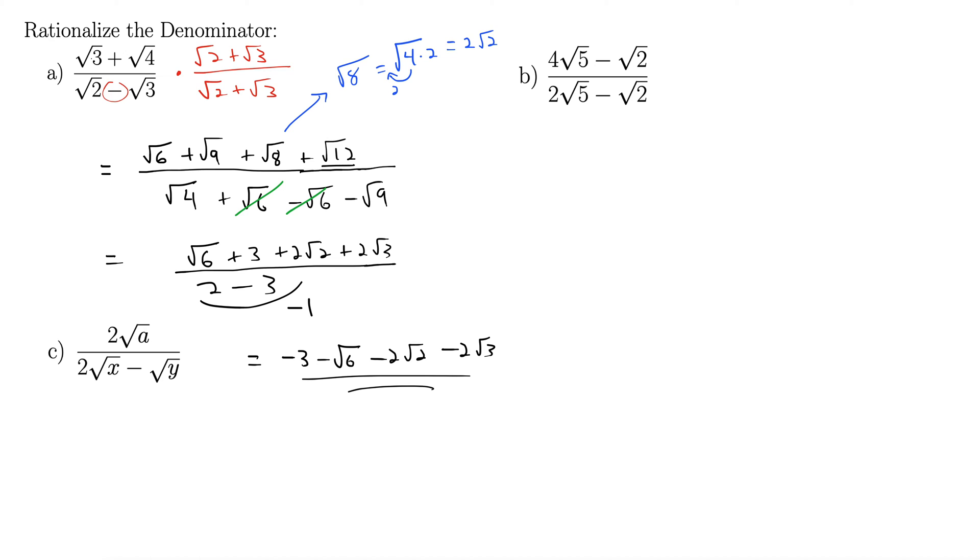Let's try b. For b, we have 4 rad 5 minus rad 2 over 2 rad 5 minus rad 2. Again, we hit it with the conjugate of the denominator. Conjugate of the denominator, so I'm just taking the denominator, but I'm changing the sign between the two terms. So, this becomes 2 rad 5 plus rad 2, and I do it on both the bottom and the top. Plus rad 2. 2 rad 5 plus rad 2.